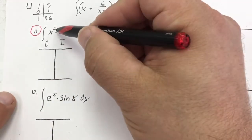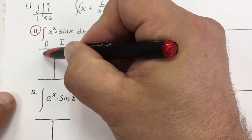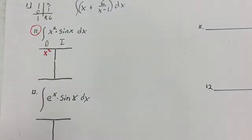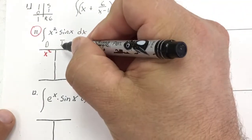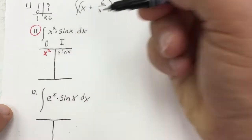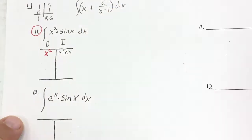What you do is you take x squared, and you're going to keep taking the derivative of x squared. Then you take sin(x), and you're going to be taking the integral of sin(x). You continue down until you reach a repeat or a zero.